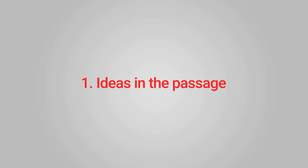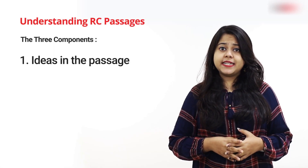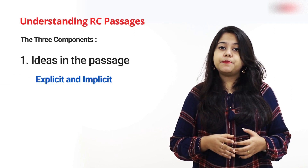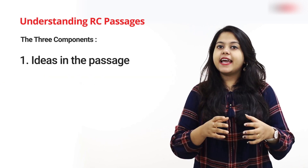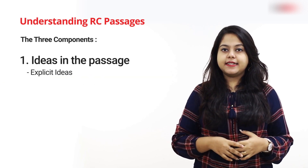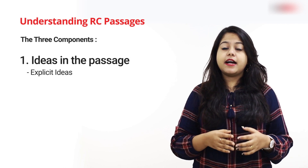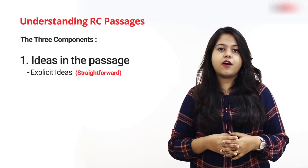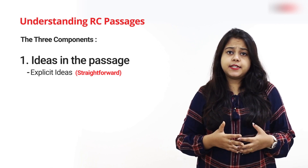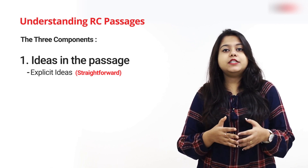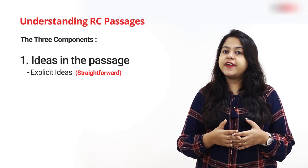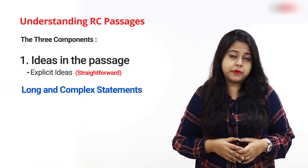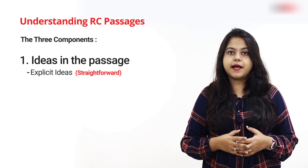First up, ideas in the passage. We need to understand that there are two types of ideas: explicit and implicit. Explicit ideas, as the name suggests, are the straightforward ideas that are directly discussed by the author. They are usually easy to understand. However, a student can face difficulties when these statements are long and complex.